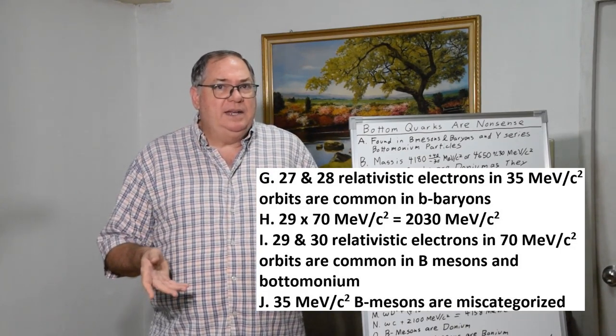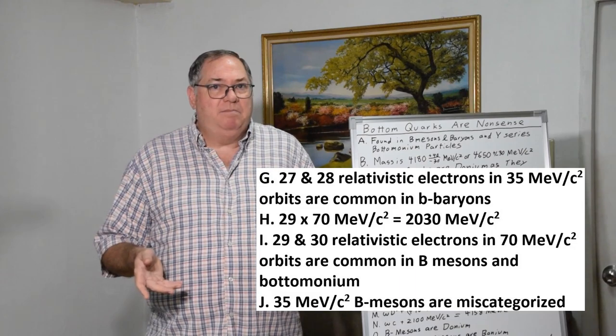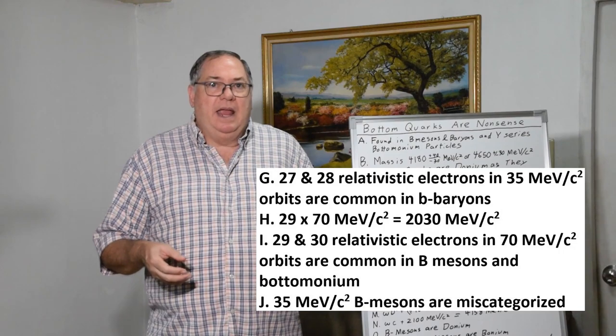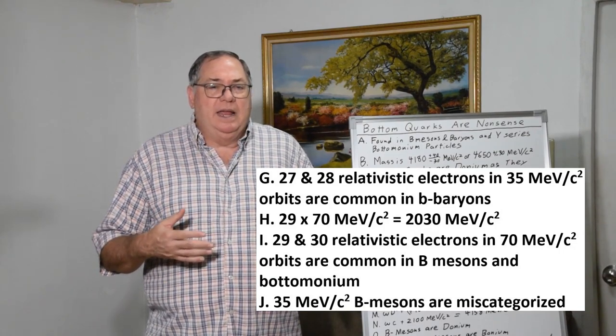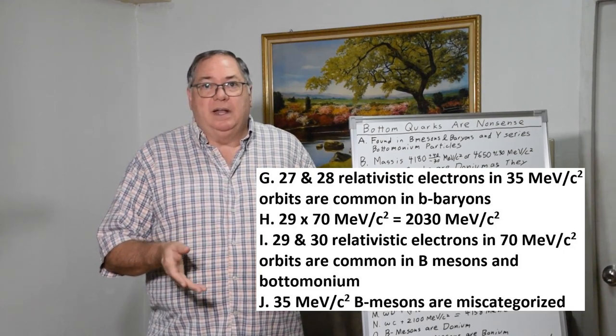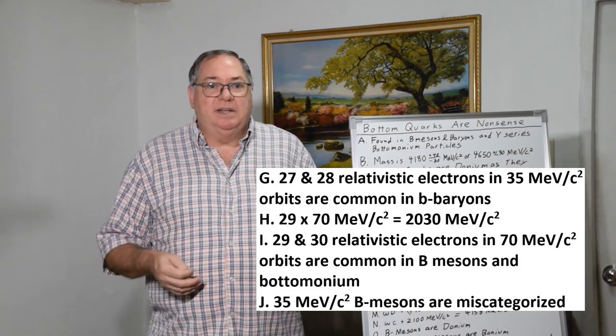So adding 2000 MeV plus in an orbit is a substantial increase in mass, and part of the reason why it was disconnected from the charm baryons and from the kaon resonances.